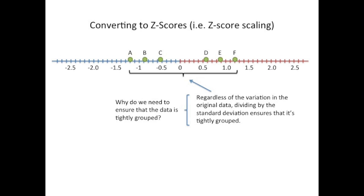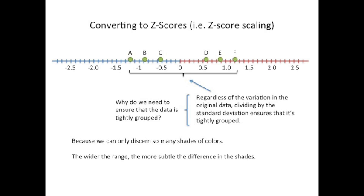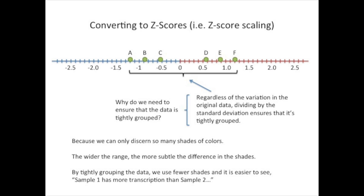Regardless of the variation in the original data, dividing by the standard deviation ensures that it's tightly grouped. And you might ask yourself, why do we need to ensure the data is tightly grouped? We do this because we can only discern so many shades of colors. By tightly grouping the data, we use fewer shades and it's easier to see sample 1 has more transcription than sample 2.